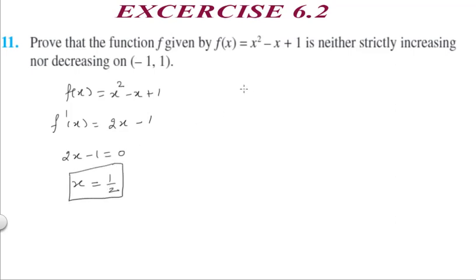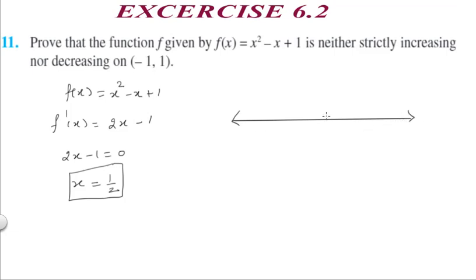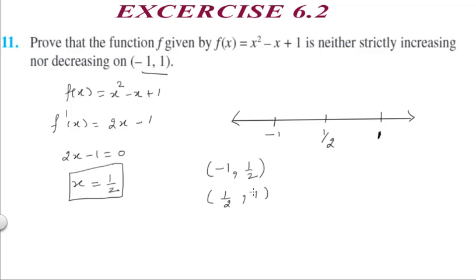We plot 1/2 on the number line, but the interval is specified from -1 to 1. This gives two sub-intervals: minus 1 to 1/2, and 1/2 to 1. In these two intervals we check whether the function is increasing, decreasing, or neither.